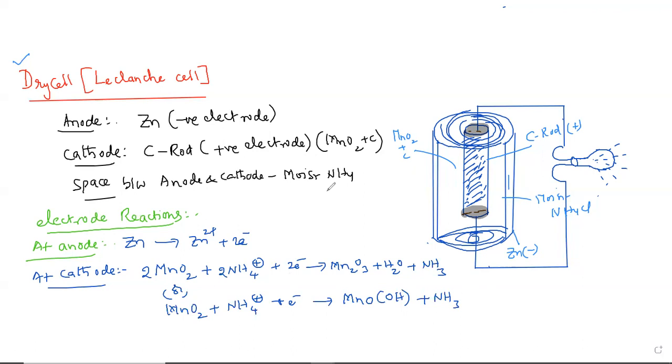This ammonia is going to combine with zinc and forms a complex. It forms a complex that is called [Zn(NH3)4]2+ tetraamine zinc ion. That's why when you want to reverse the cell reaction, it is not going to be possible because reverse reaction is not possible because of this complex. So, this complex is formed means we can understand that reverse reaction cannot be possible.